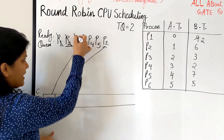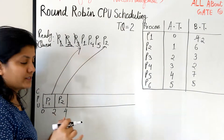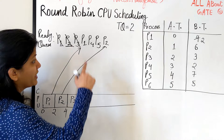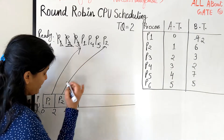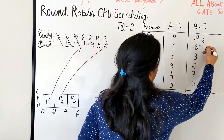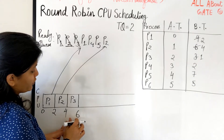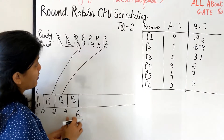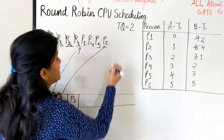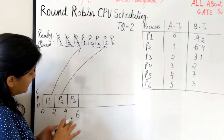Whenever you take a process, cross it off so you don't forget it has already been given a chance. P3 is given one quantum — from time 4 to 6, that's 2 burst units. Between time 4 and 6, check if any other process is coming. Yes, at time 5, P6 arrives, so P6 is placed in the ready queue.